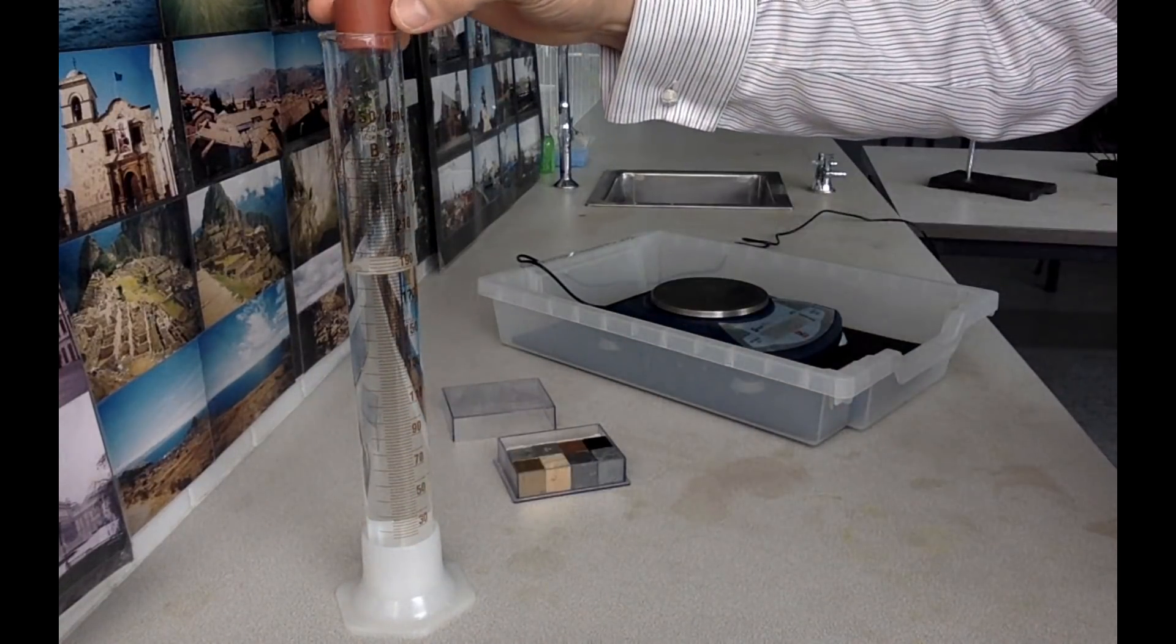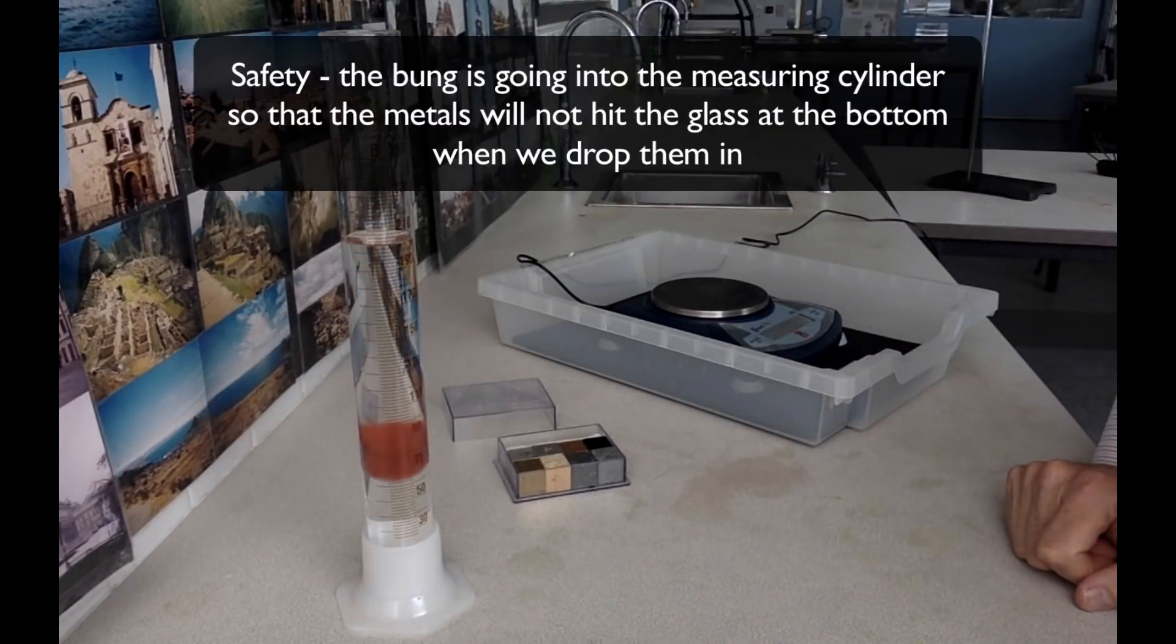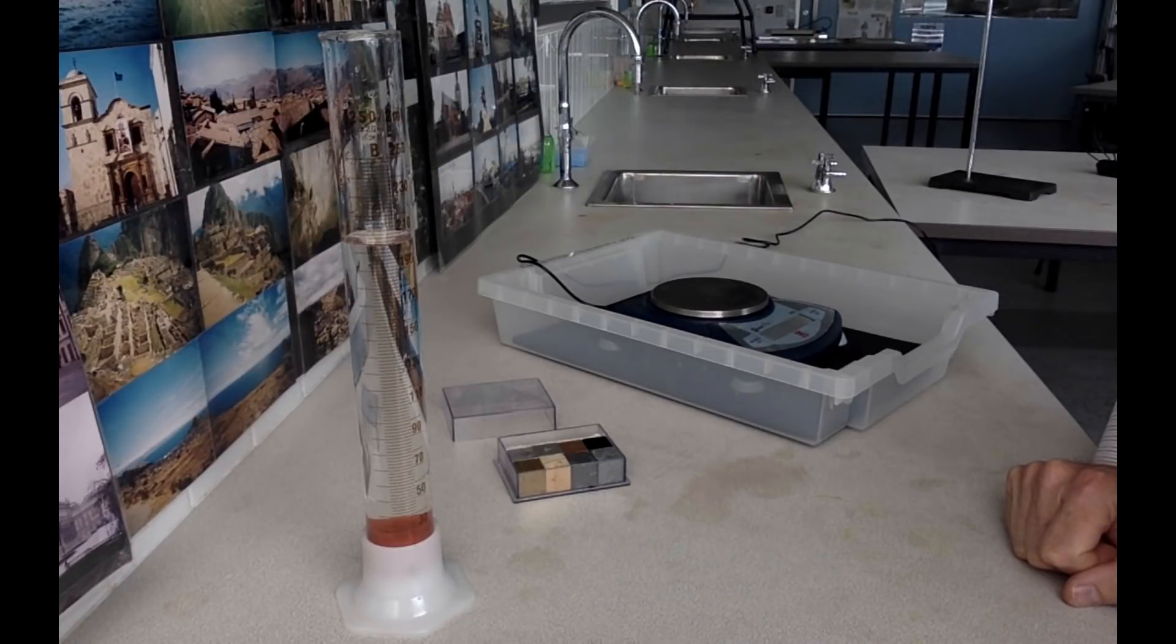Next, we're going to drop our rubber bung into the measuring cylinder. It doesn't matter if a bit of water splashes out at this stage. We're going to let that sink to the bottom.